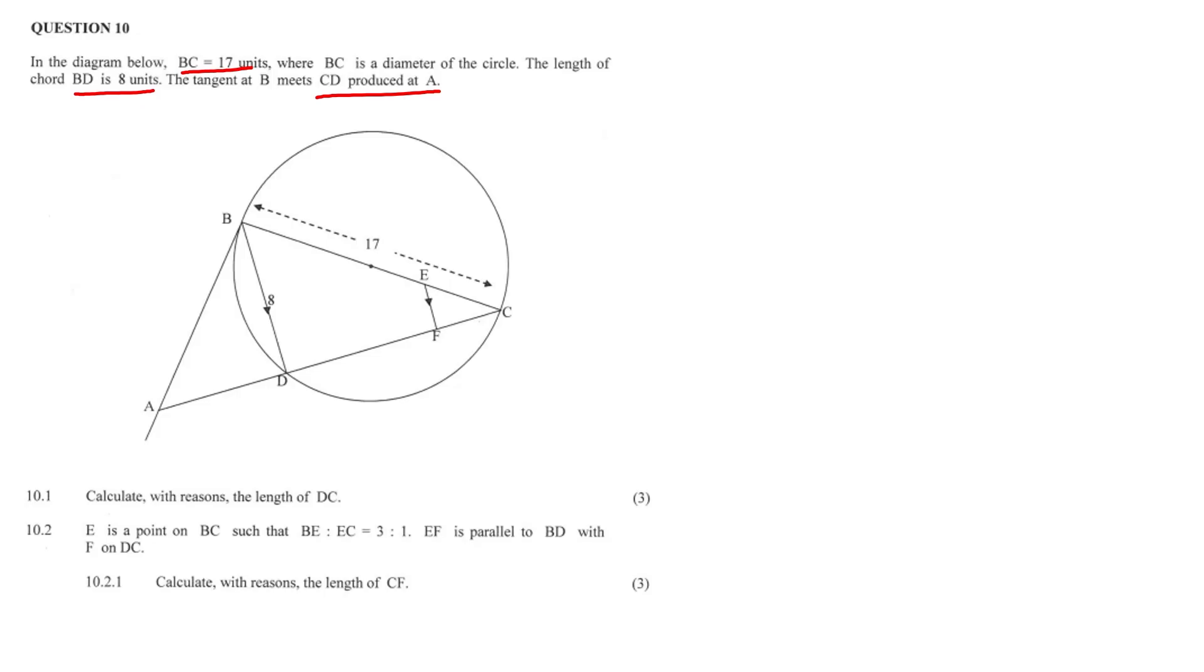The diameter of a circle always subtends 90 degrees. We call that angles in a semicircle. So BDC is equal to 90 degrees. And because we have a 90 degree angle here in a triangle, we can utilize Pythag. Angles in a semicircle, just wrote my reasons there.